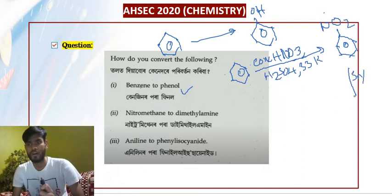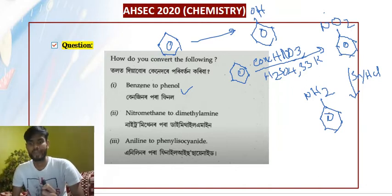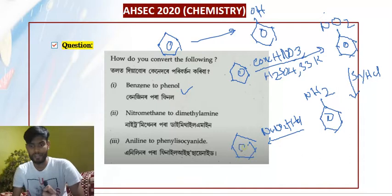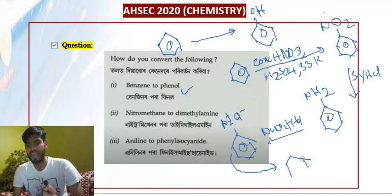Then for the reduction, we use Sn and HCl. We can use the preparation of amines using Sn/HCl. The reduction converts nitrobenzene — that is nothing but aniline. You can use amines. So what do you do with amines? You can use NaNO2 plus HCl to form diazonium salt, which is N2+ Cl−.